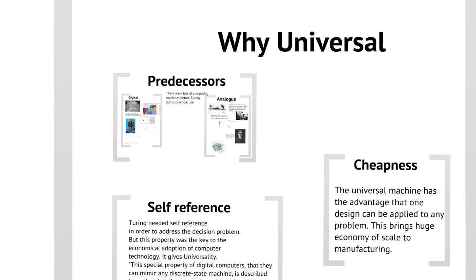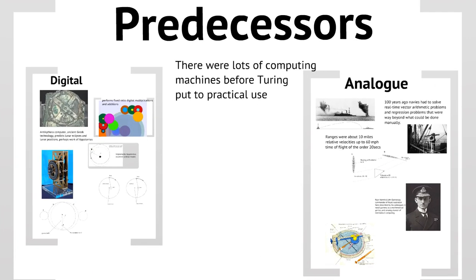So, why universal? Well, there were predecessors. There were lots of computing machines before Turing, and these were put to practical use.